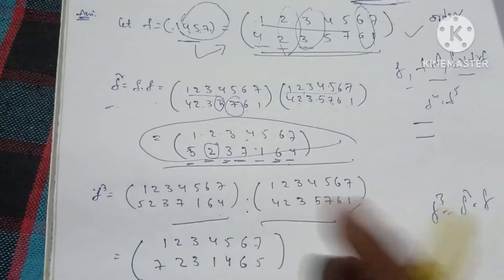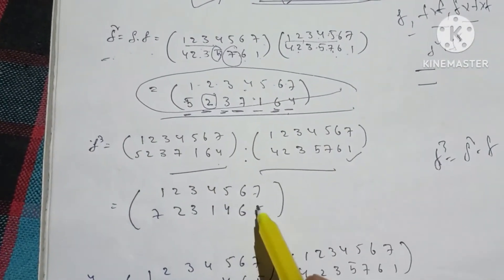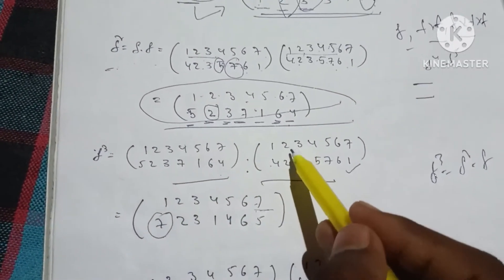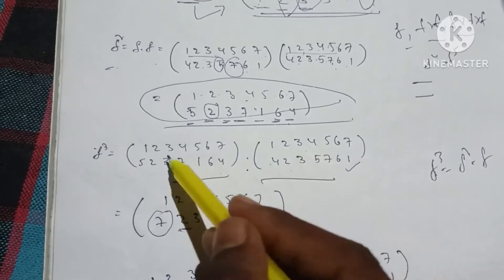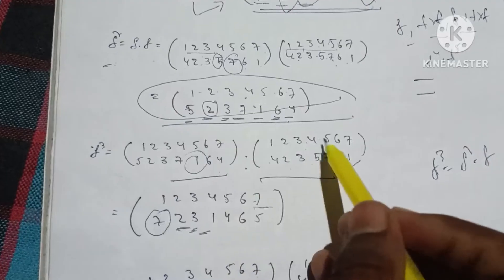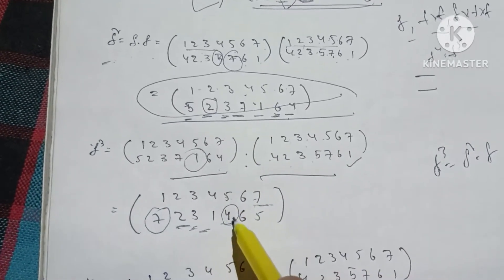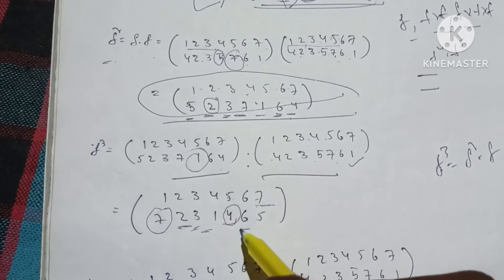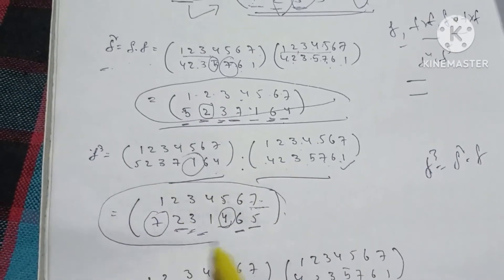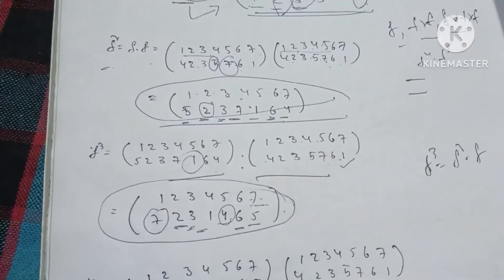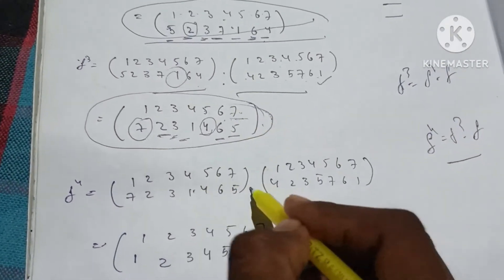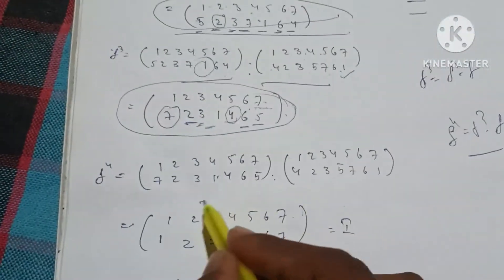So F³ value is equal to F² times F value. So multiply: elements 1, 2, 3, 4, 5, 6, 7. 1→4, 4→7, so 1→7. Next: 2→2 same. 3→3. 4→5. 5→7. 6→6. 7→5. F³ is equal to x — so F value is determined.